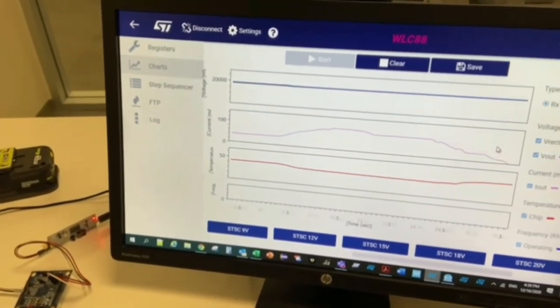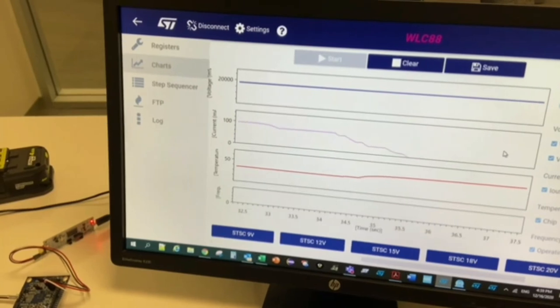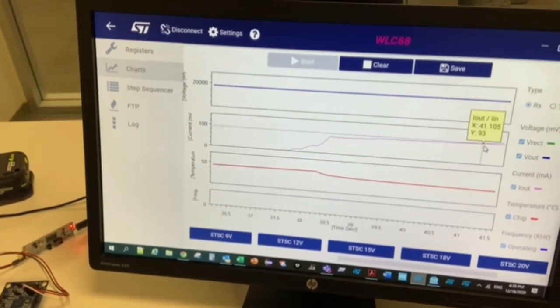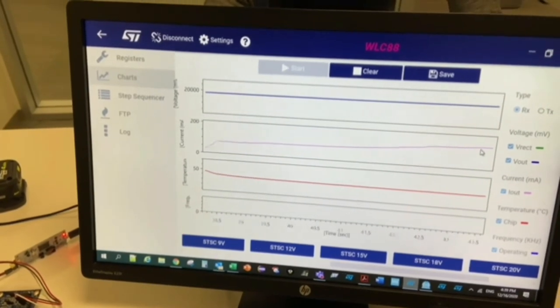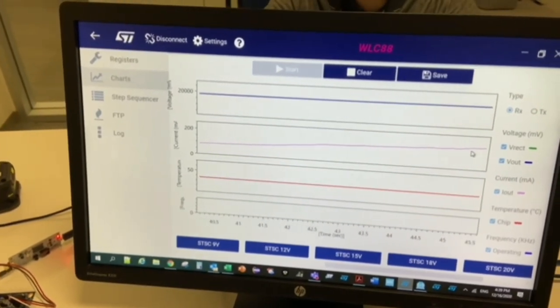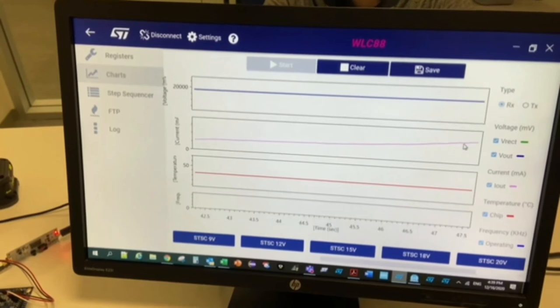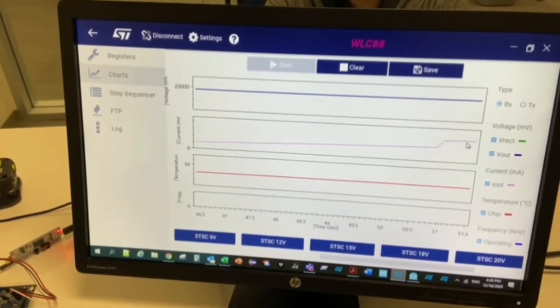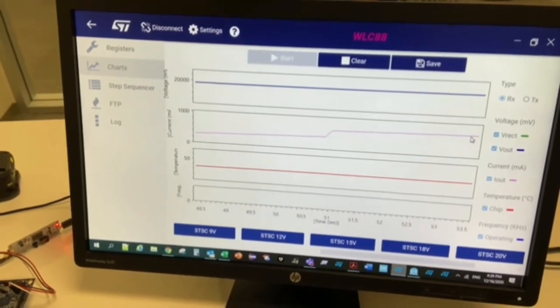The charging is visible by looking at the current on the screen on the GUI which is reported by the STW-LC88 and we can see that the current starts rising through the negotiation between the RX and the TX side that is step-by-step increasing the current.